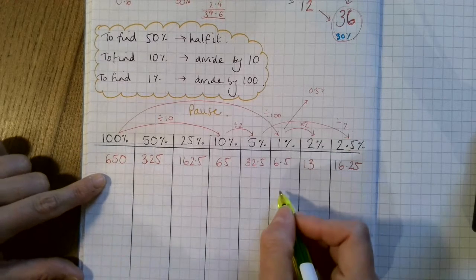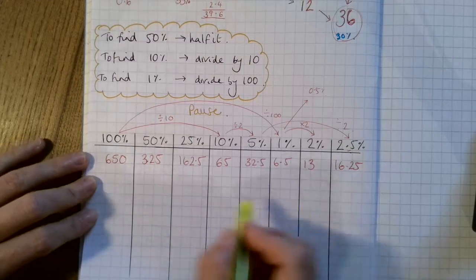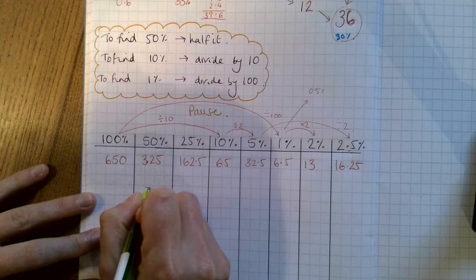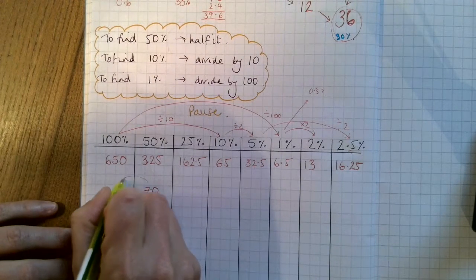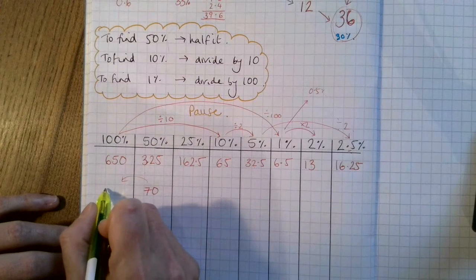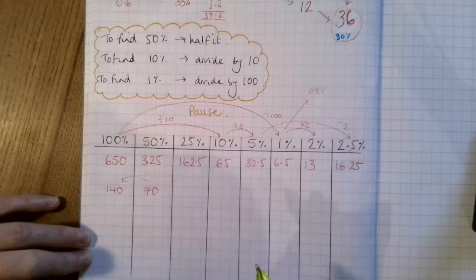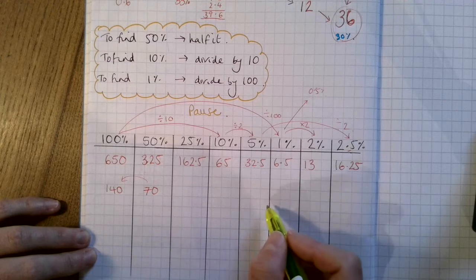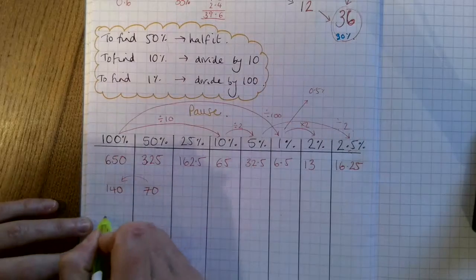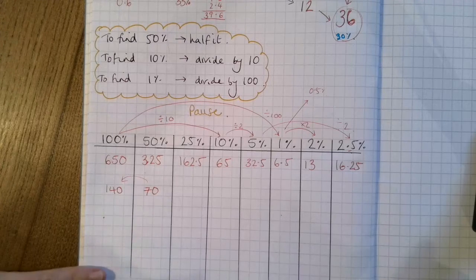Now, later on in the sheet, it gives you other values in the table. It doesn't necessarily give you the whole 100%. So it might give you the 50%. So say the 50% was 70. Then it would want you to go this way and find the 100%. So you'd need to double 50% to get to 100%, so it would be 140. And you can go from there. Or it might give you 1%, and you could times it by 100 to get to 100%. It's a bit like a puzzle. You're trying to fill it all in.